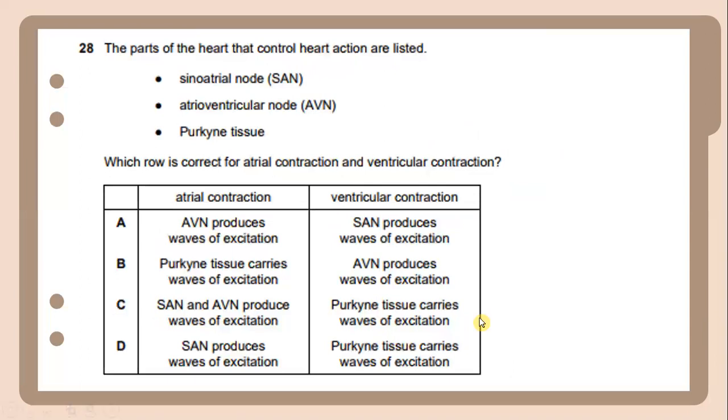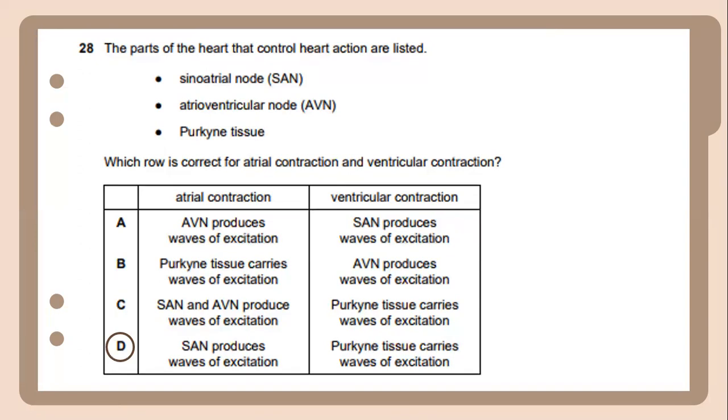The parts of the heart that control heart action are listed. Which row is correct for atrial contraction and ventricular contraction? For atrial contraction, the SAN produces wave of excitation. For ventricular contraction, Purkinje fibers carry wave of excitation.